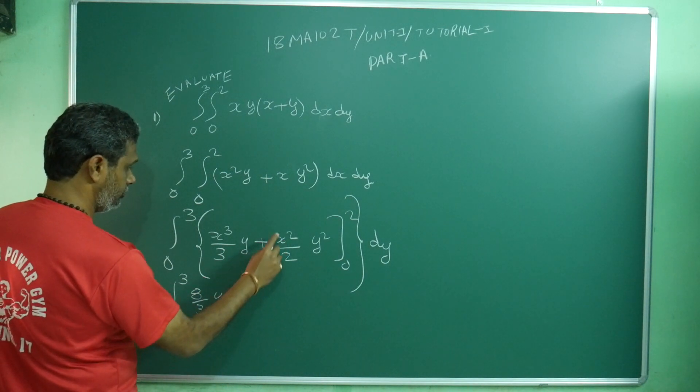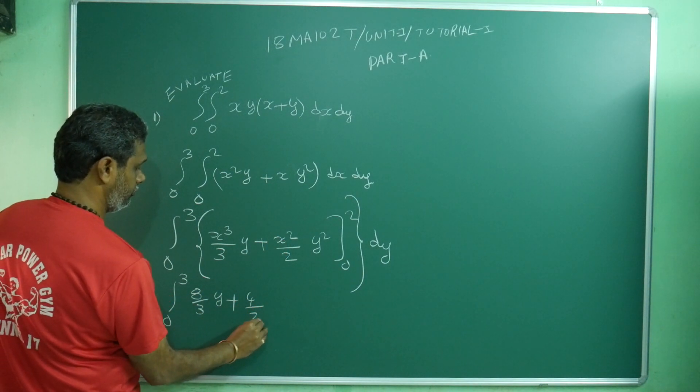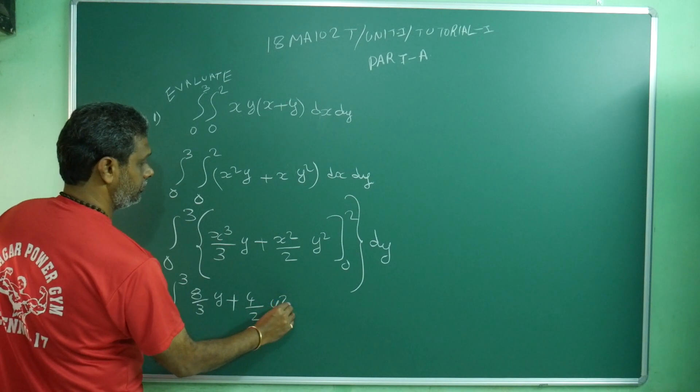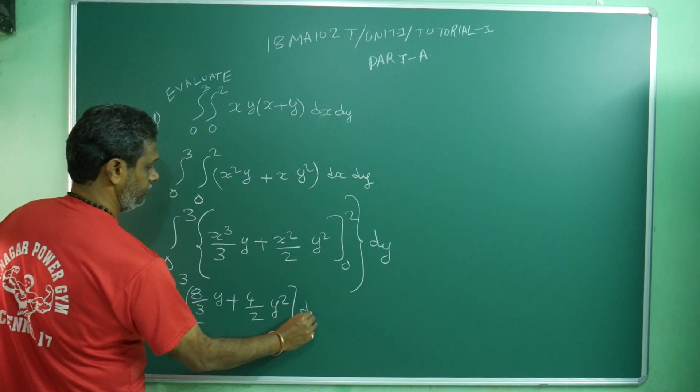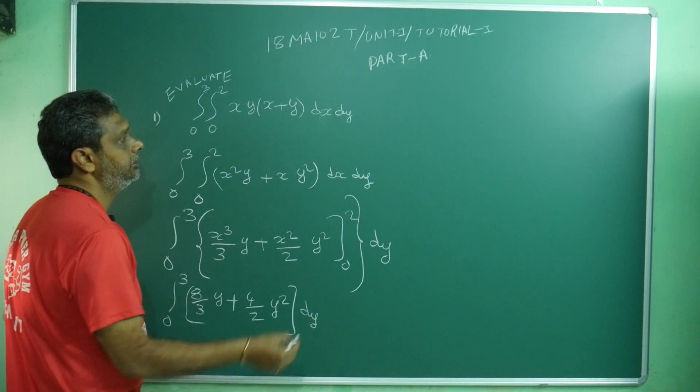2 cubed, sorry 2 squared, 4 by 2 into 4 by 2 into y squared. 4 by 2 into y squared dy, correct or not?